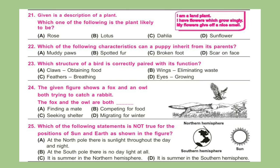Question 22: Which of the following characteristics can a puppy inherit from its parents? Question 23: Which structure of a bird is correctly paired with its function? Question 24: The given figure shows a fox and an owl both trying to catch a rabbit. The fox and the owl are both dash?